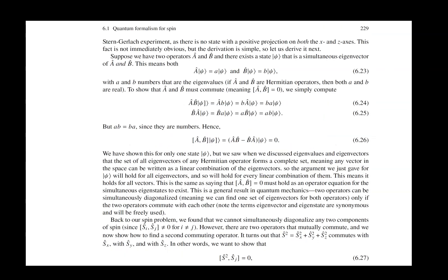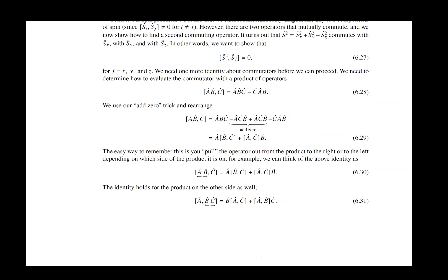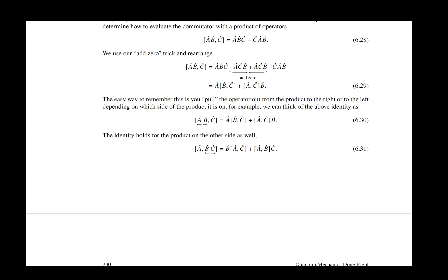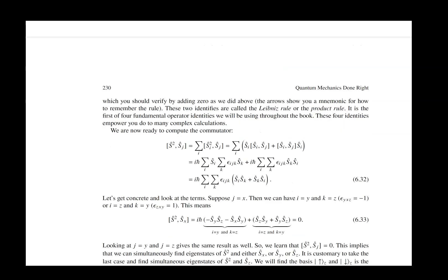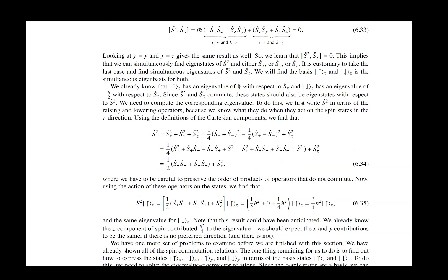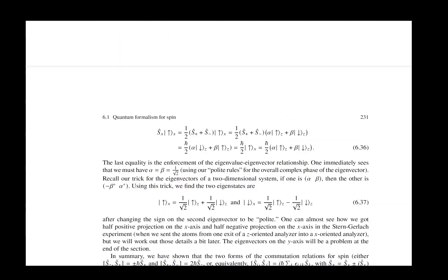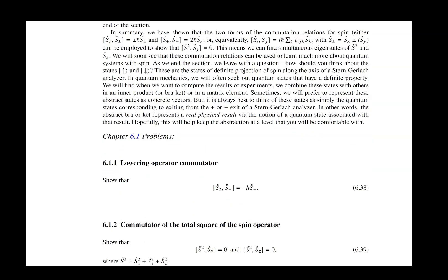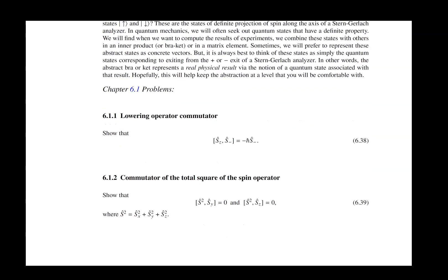And then, once we have that, we start working on more complicated things such as the Leibniz rule for products of commutators. Once we have that done, we can work out the commutation relations of S squared with each of the different components of S.